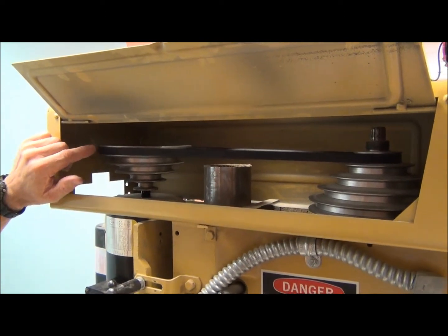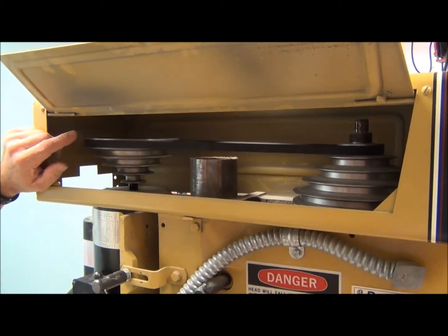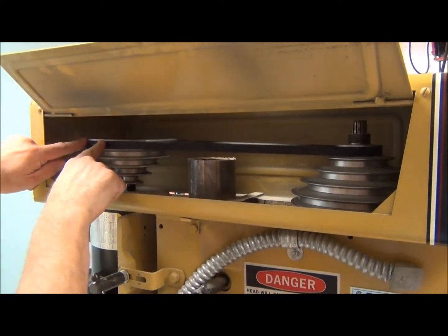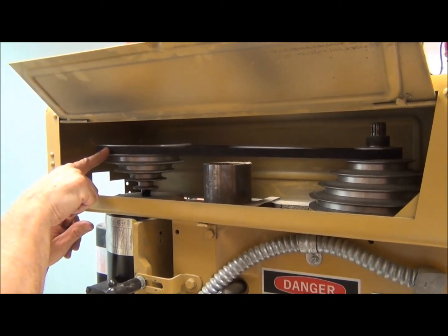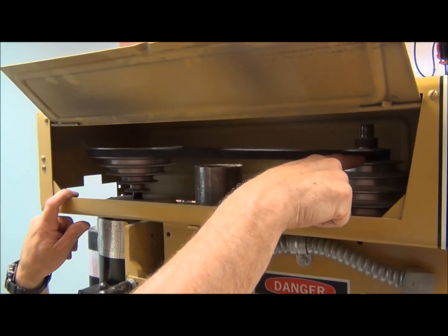Now we have set it to highest speed. So in our demonstration at the beginning, we have this on the highest speed, which is the largest pulley for the motor and the smallest pulley for the spindle.